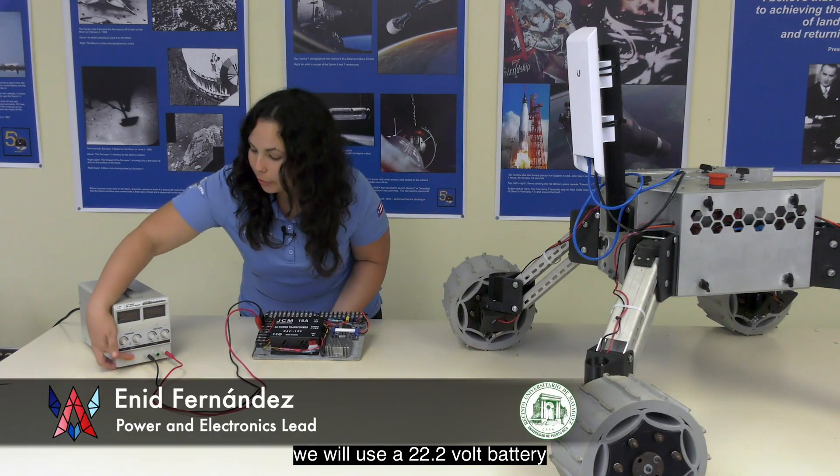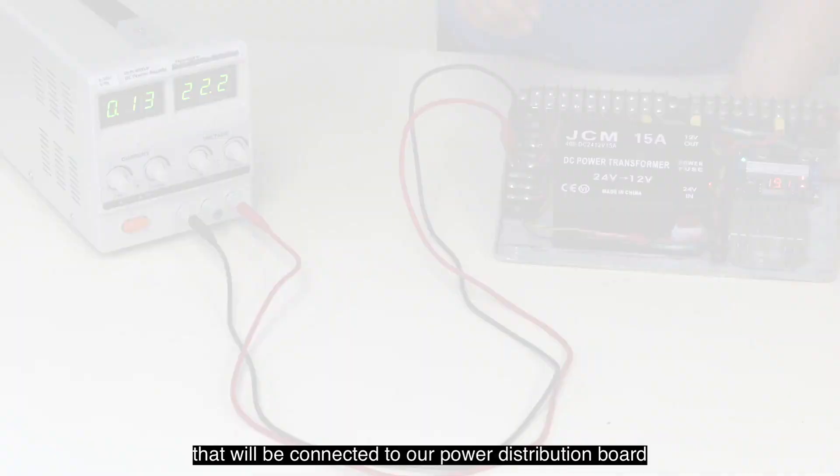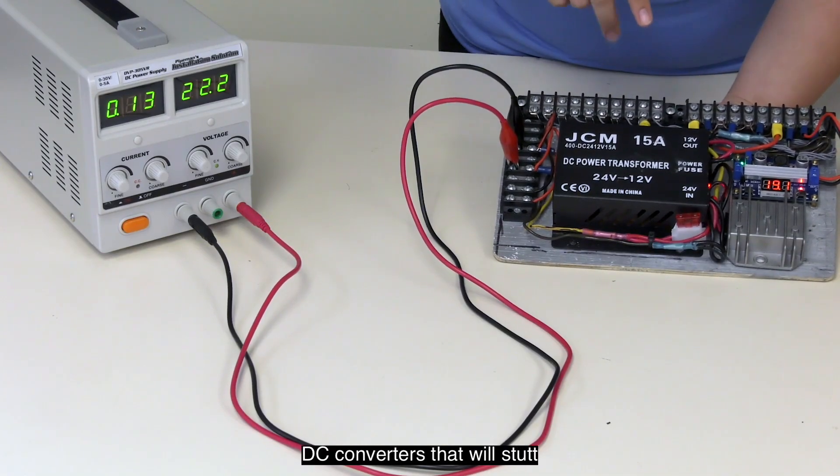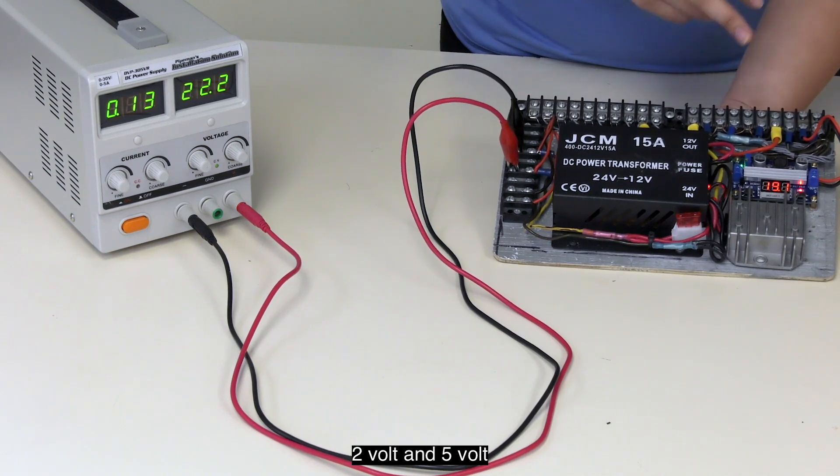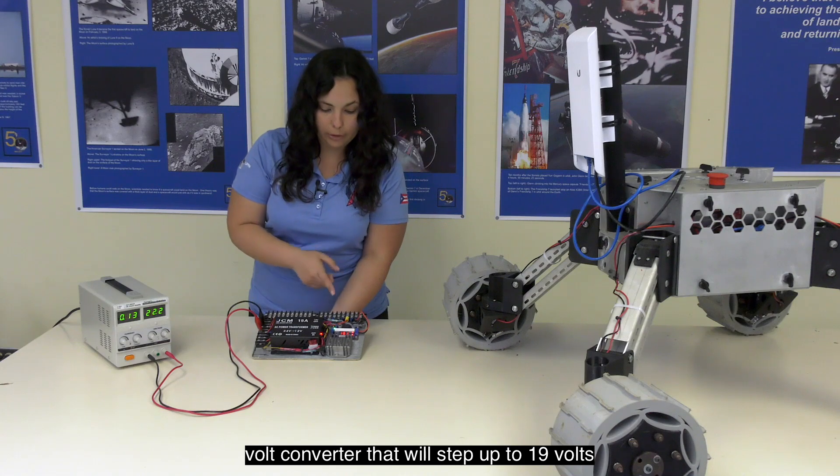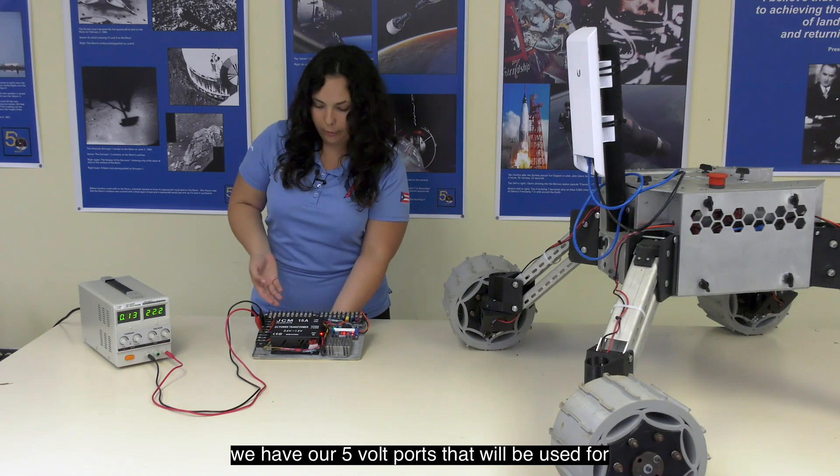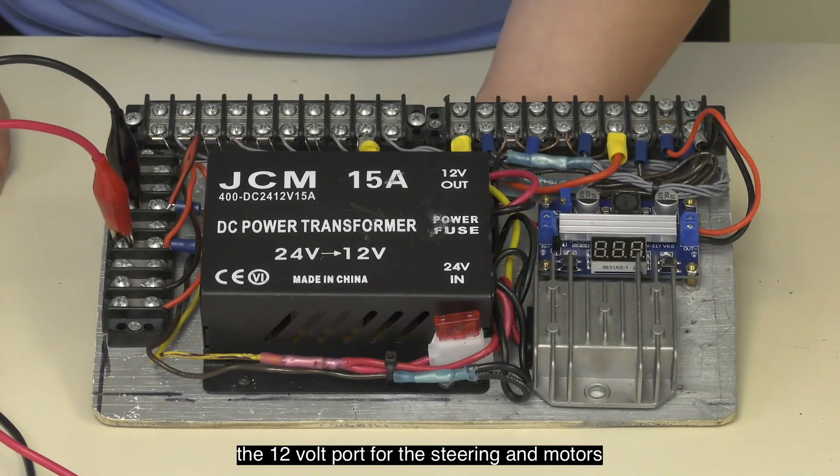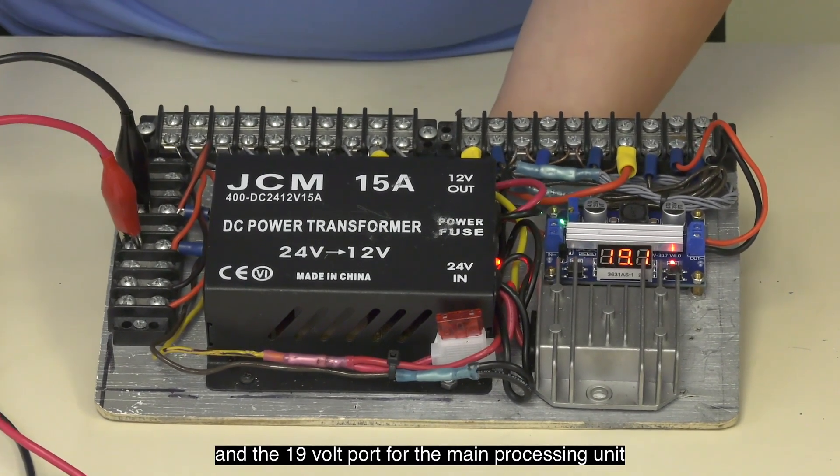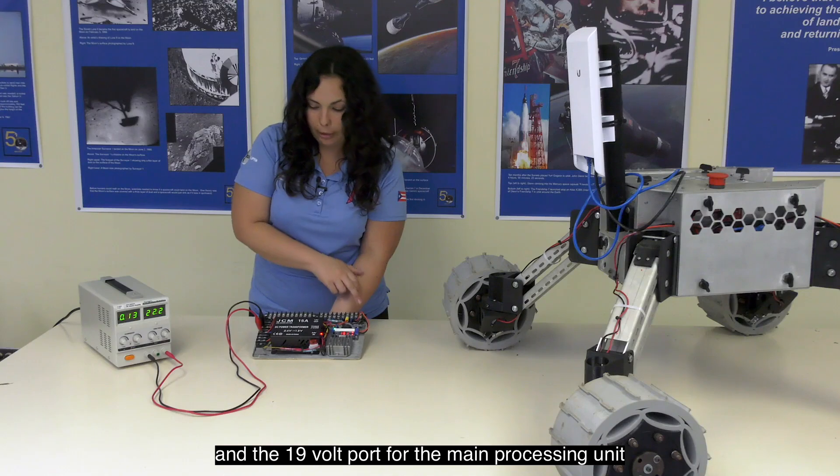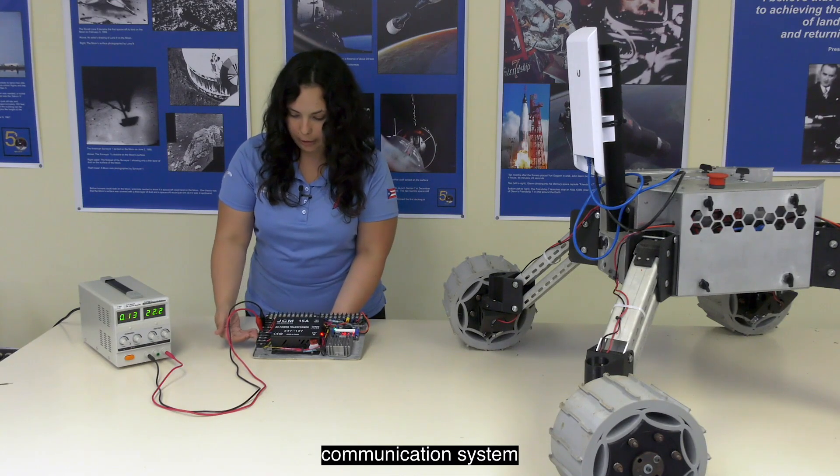To power our rover, we will use a 22.2 volt battery that will be connected to our power distribution board which features two DC to DC converters that will step down the voltage to 12 volt and 5 volt, as well as a buck converter that will step up to 19 volts. We have our 5 volt ports that will be used for the microcontrollers and cameras, the 12 volt port for the steering and motors, and the 19 volt port for the main processing unit, as well as a 24 volt port for our communication system.